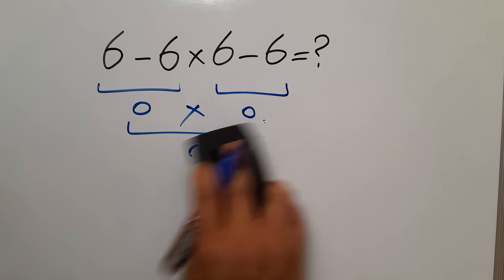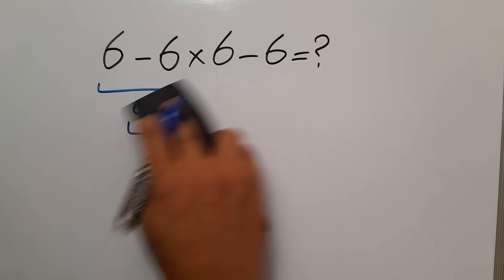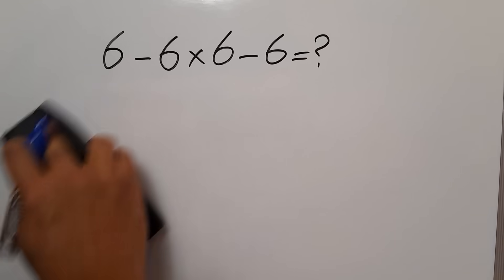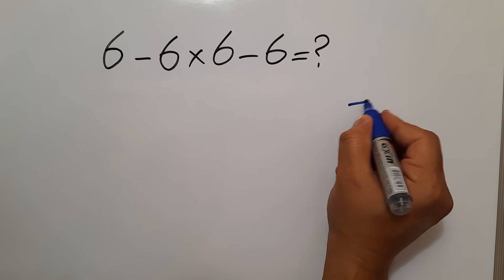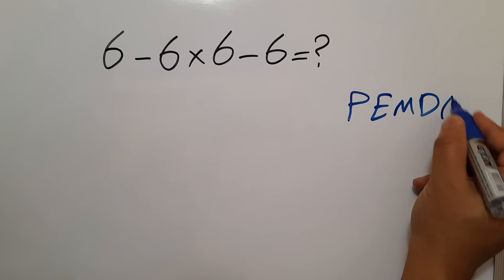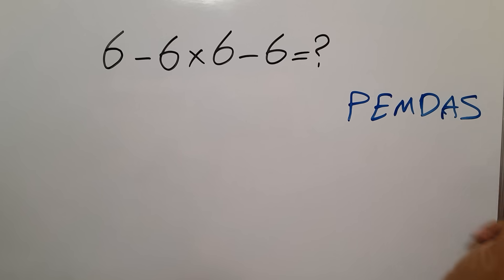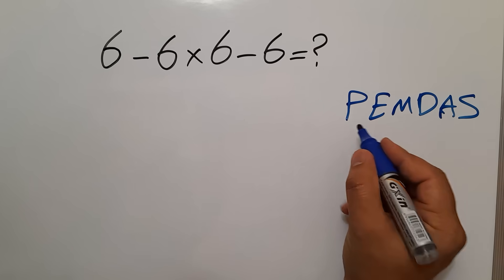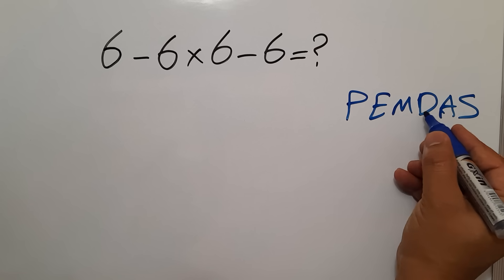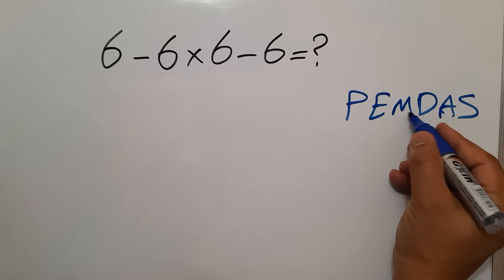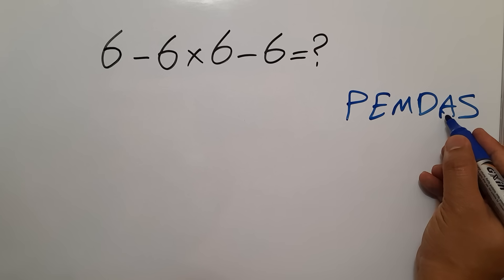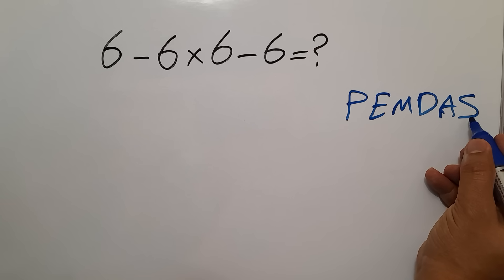According to the order of operations, which is PEMDAS: P stands for parentheses, E stands for exponents, M and D stands for multiplication and division, and A and S stands for addition and subtraction.